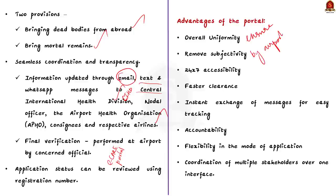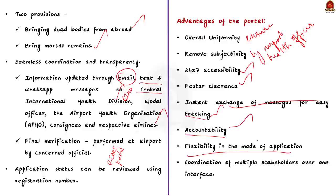As per the Union Health Ministry, advantages of this initiative include 24/7 accessibility, fast clearance, instant message exchange for easy tracking, accountability, and flexibility in the mode of application — where anyone from the family of the deceased can apply, not just the airlines. The portal also provides coordination of multiple stakeholders over one interface. This is a very good initiative of the central government and can be used as an example in main exam answer writing.